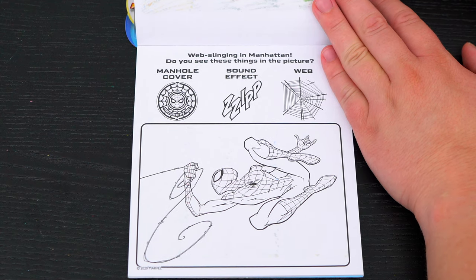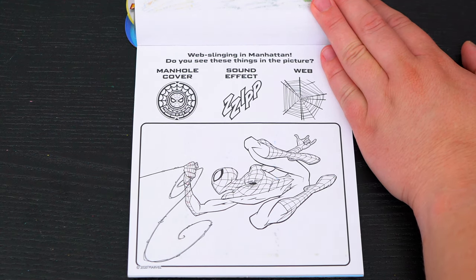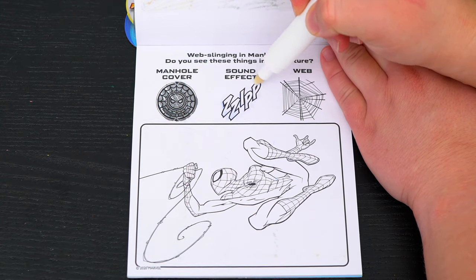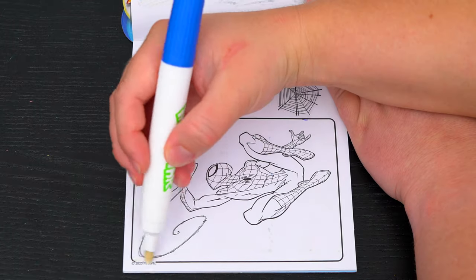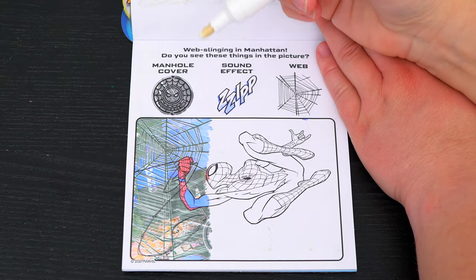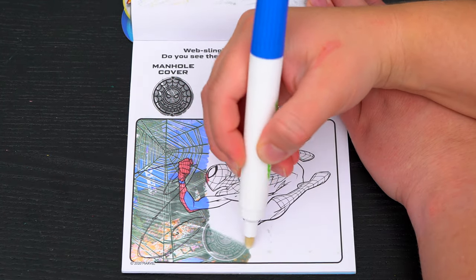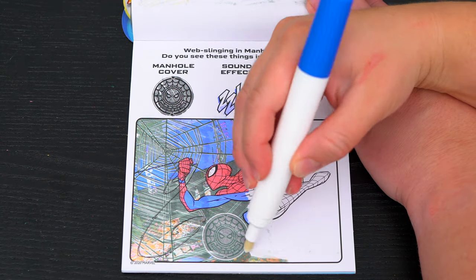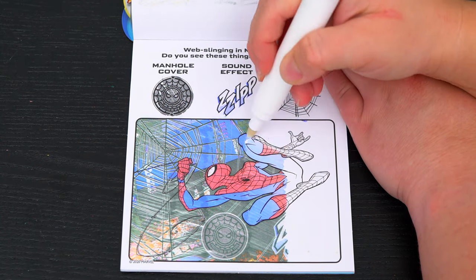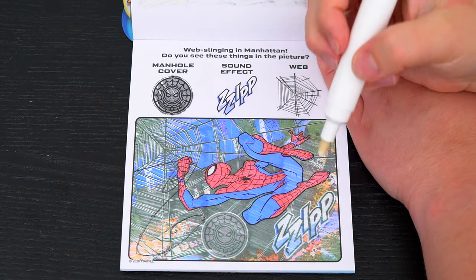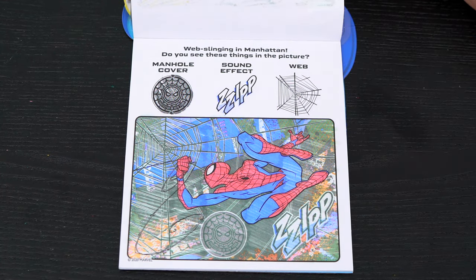Do you see these things in the picture? Looks like we need to find a manhole cover, this sound effect, and a web. Okay, here's the web! And there's the manhole cover! And there's the sound effect! Yay, we found everything!